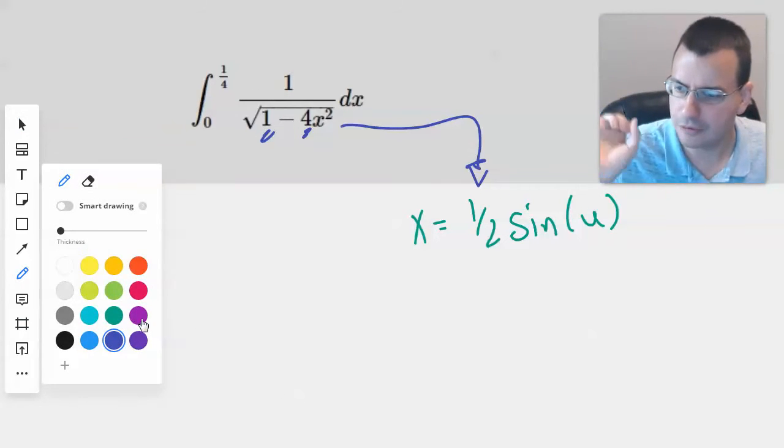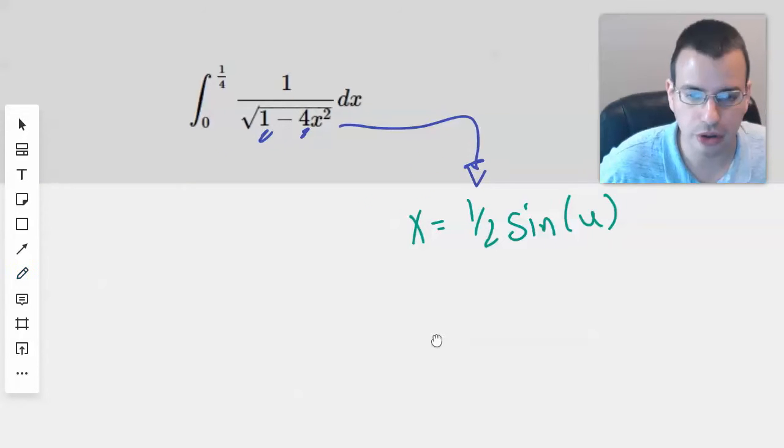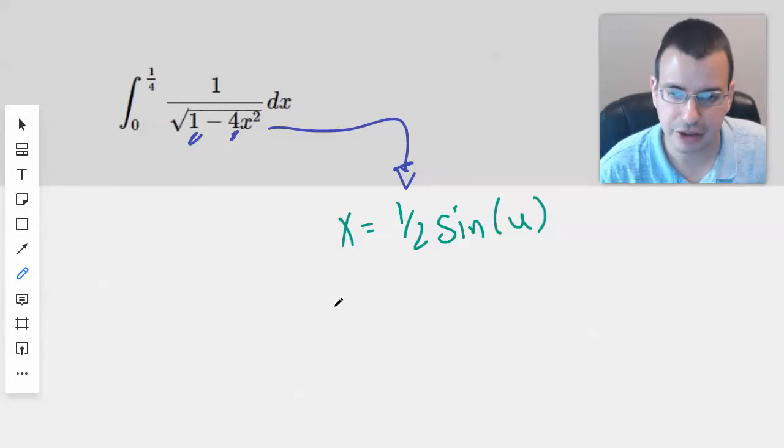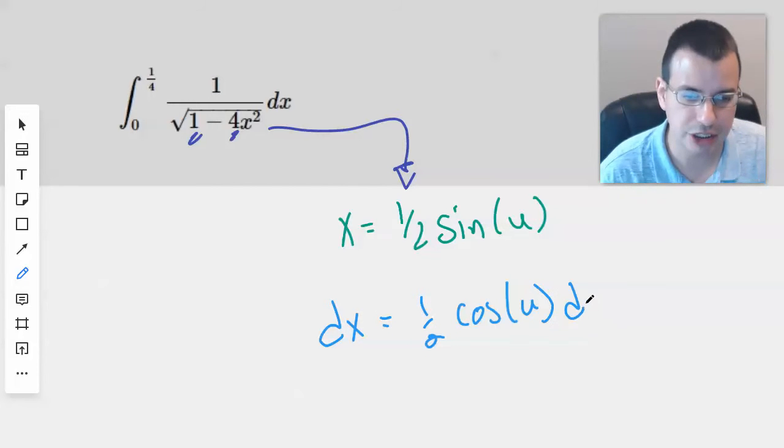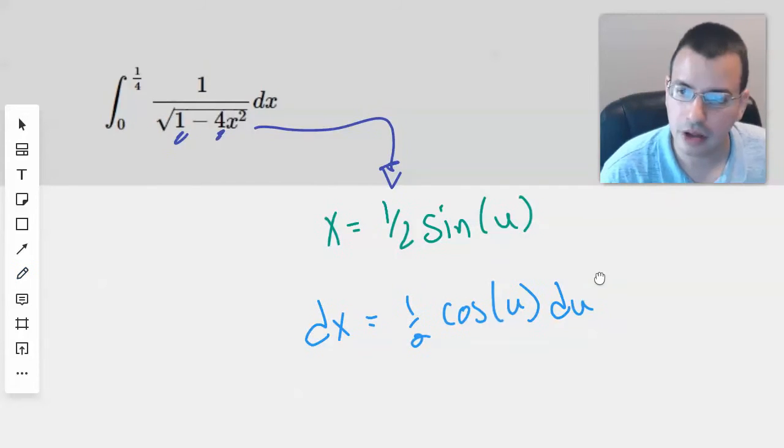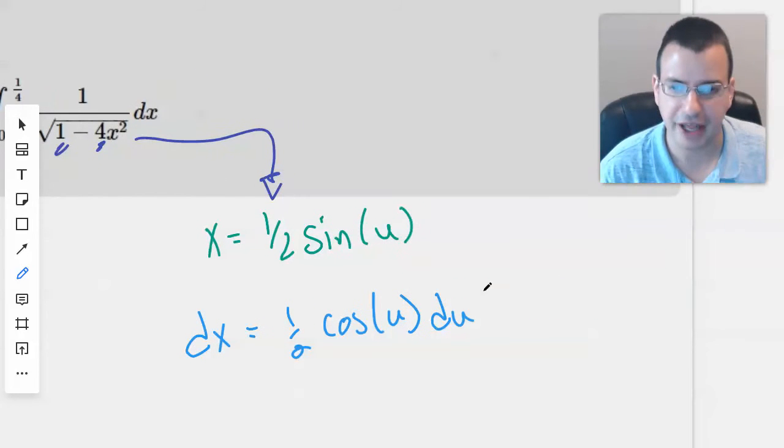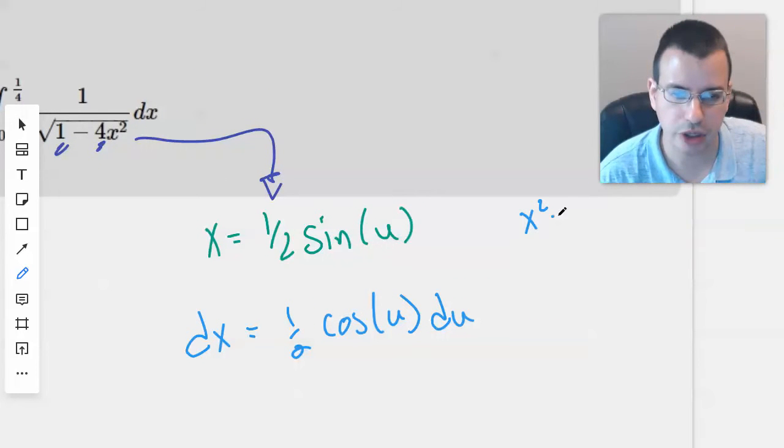And just to kind of foreshadow, we will do some derivatives. So we have derivative of x equals derivative of x, one half cosine of u du. Let's see, we'll also find x squared. x squared equals one fourth sine squared of u.